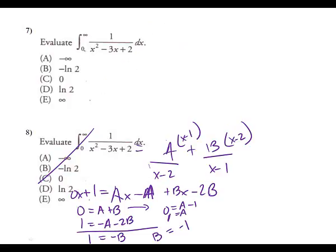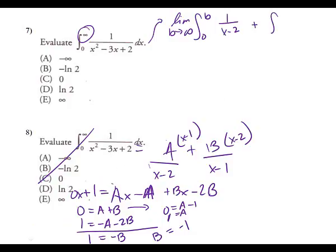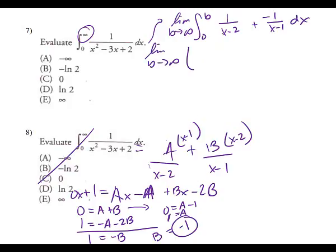Now writing it as an improper integral: limit as B approaches infinity from 0 to B of one over (x minus 2) plus negative one over (x minus 1), DX. Integrating: limit as B approaches infinity of natural log of |x minus 2| minus natural log of |x minus 1|, from 0 to B.